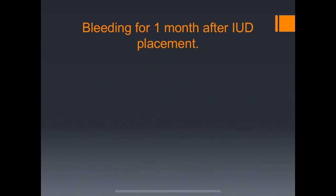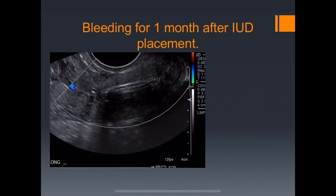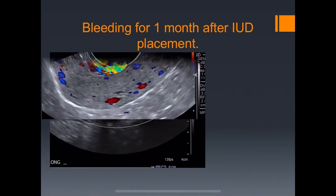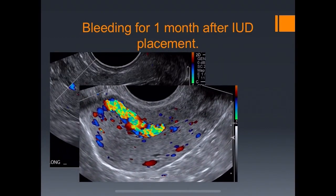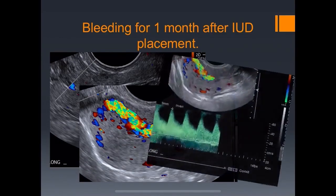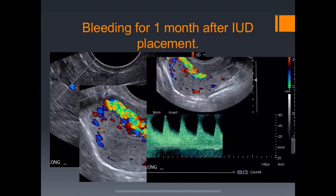A corollary case: bleeding for one month after IUD placement. The IUD is low in position. Color flow shows hypervascular flow extending into the myometrium — another case of an AV fistula or malformation secondary to procedure, demonstrating high-velocity, low-resistance flow.